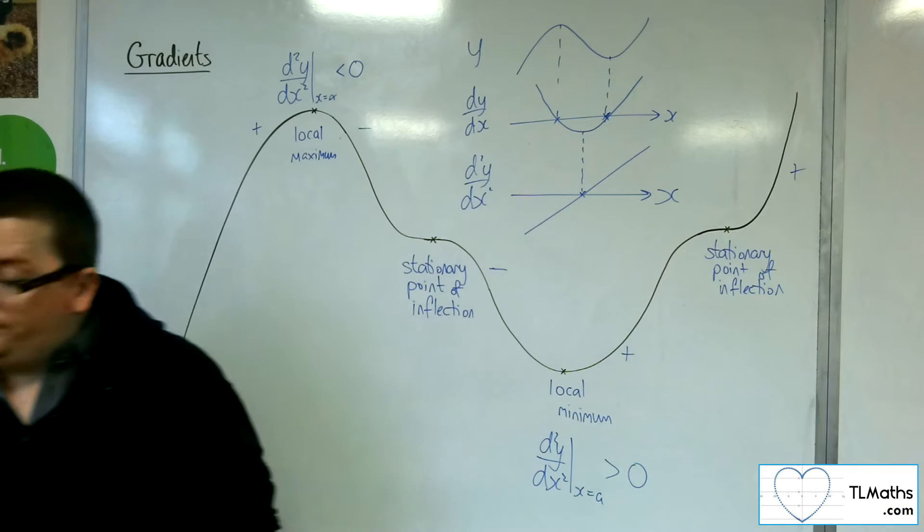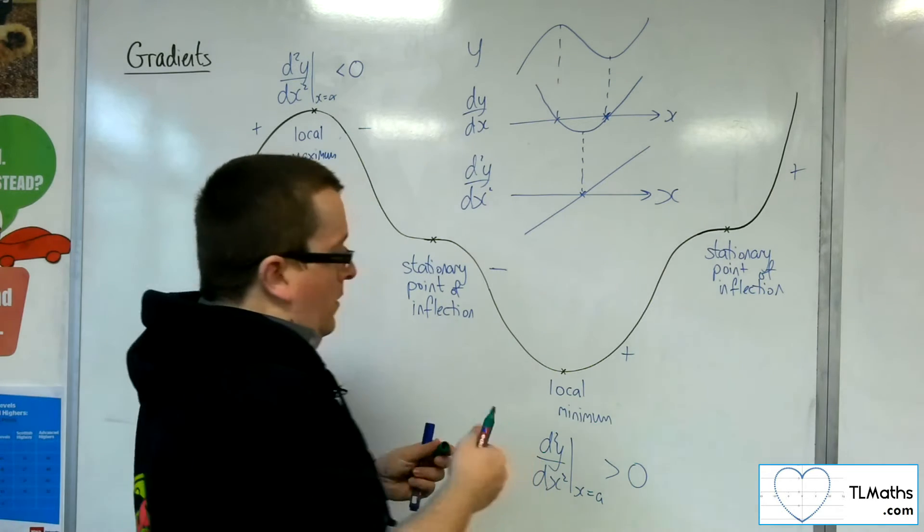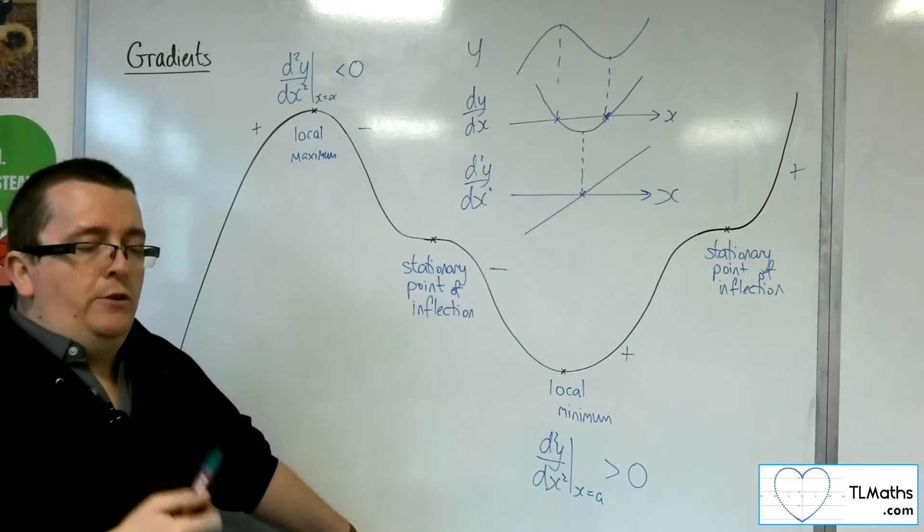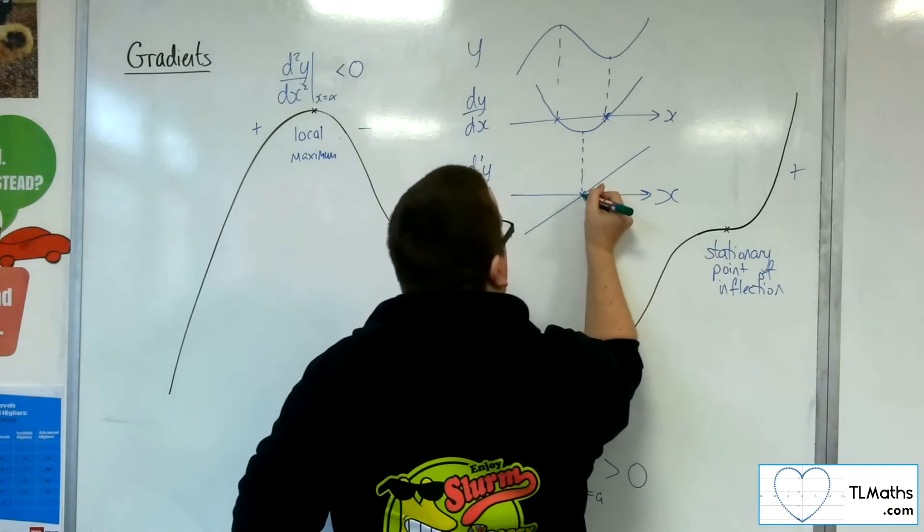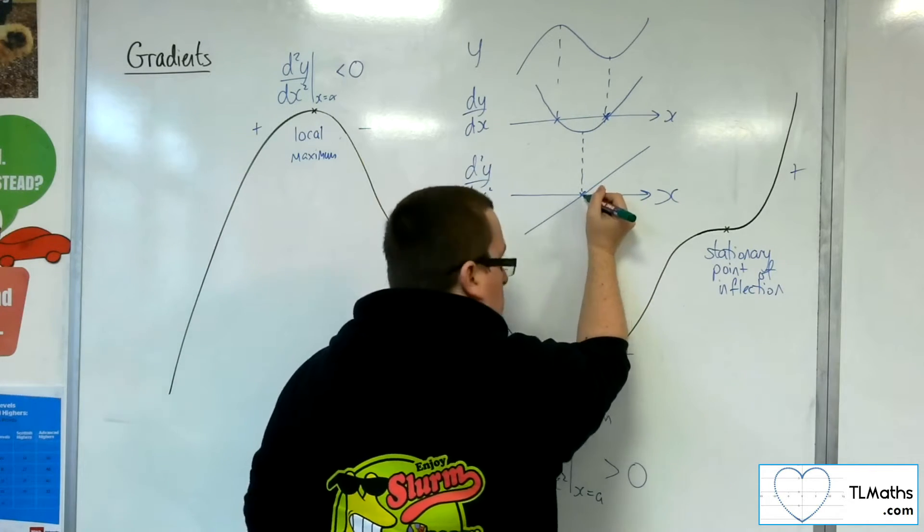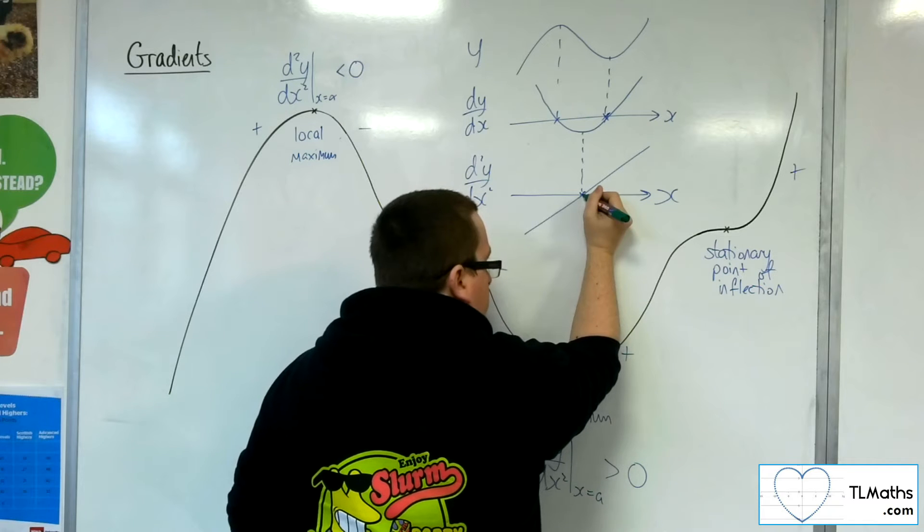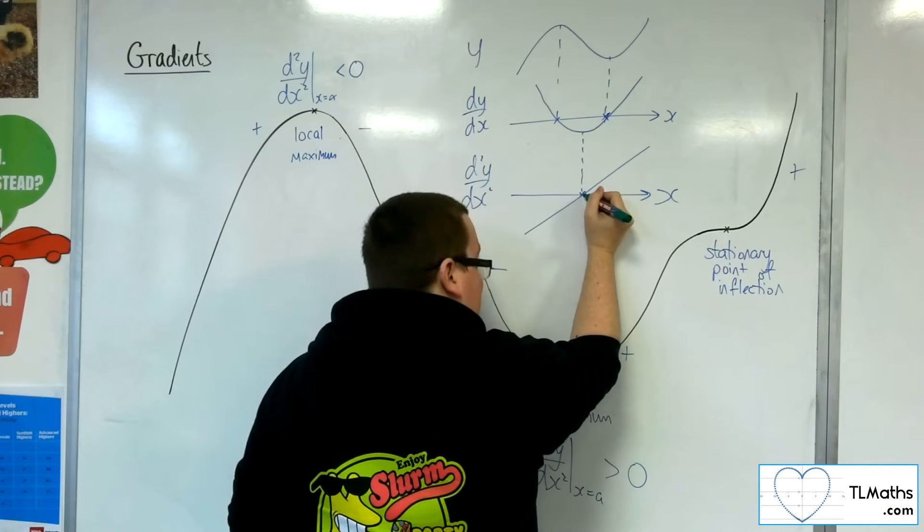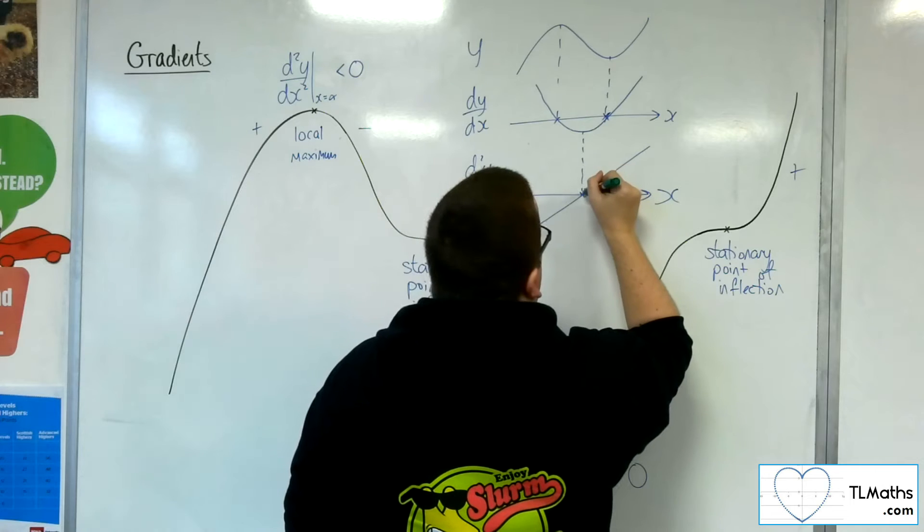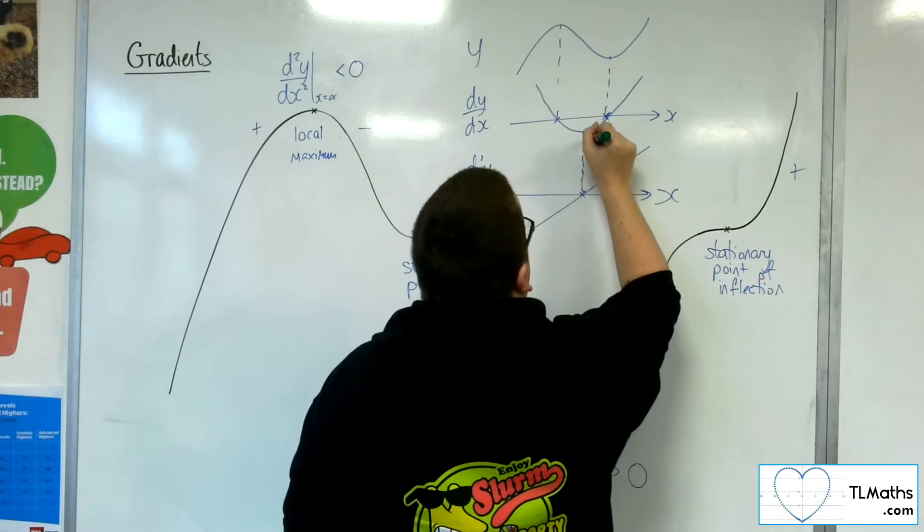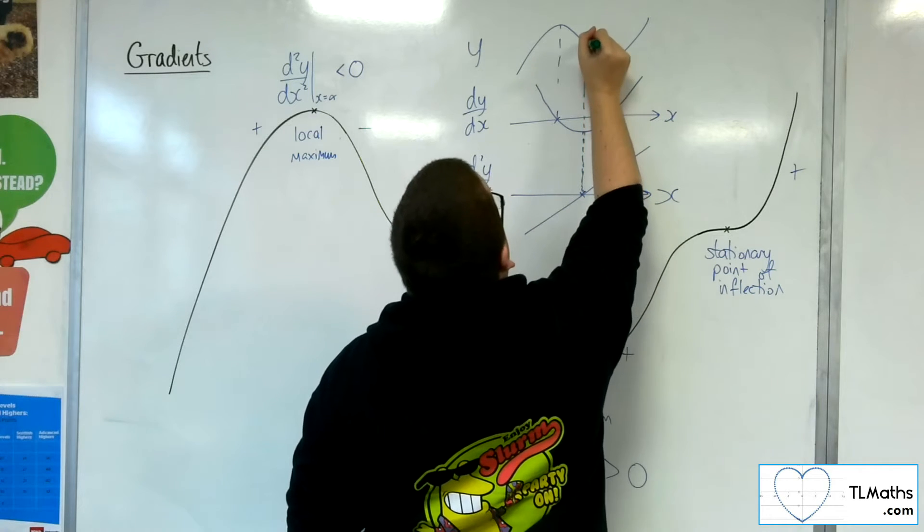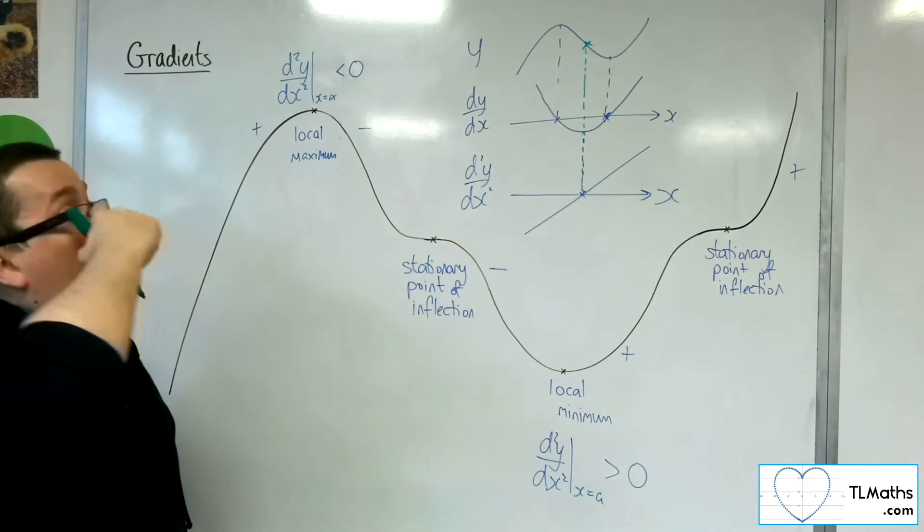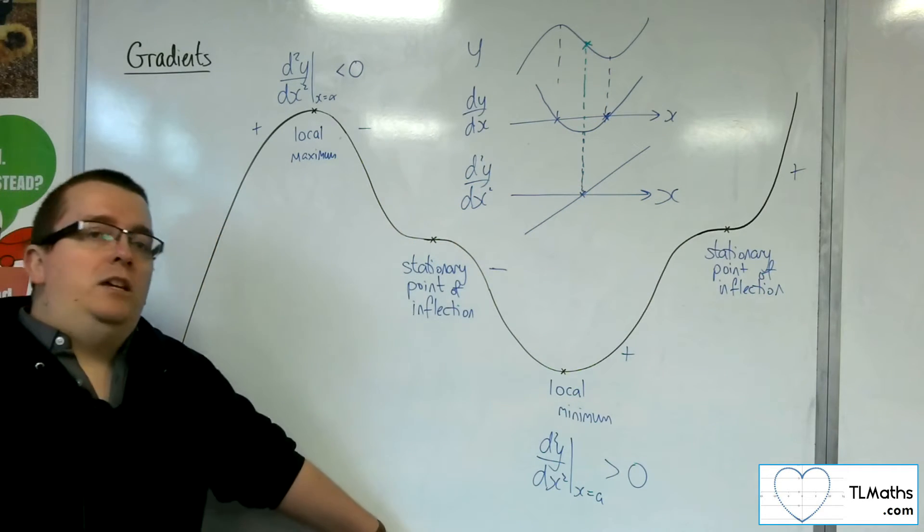Right, now, what you might notice in this is that at this point, the second derivative is zero. That point, the second derivative is zero. If we follow that up, back up to the original curve, it identifies a specific point on that cubic.